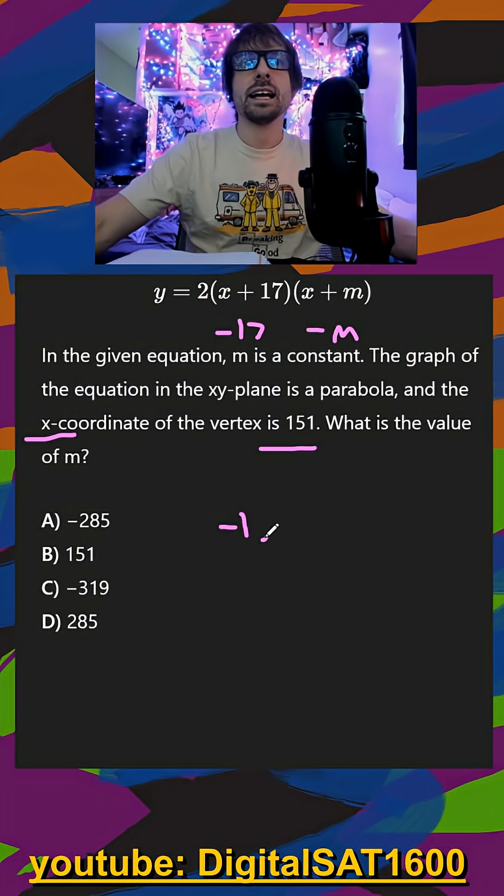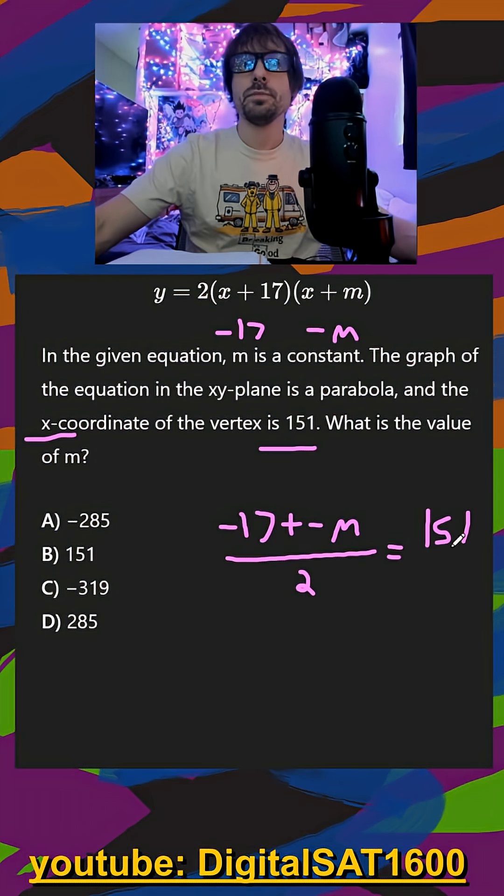So if I do negative 17 plus negative m divided by two, this should be equal to 151. Times both sides by two, I get negative 17 minus m is equal to 302.